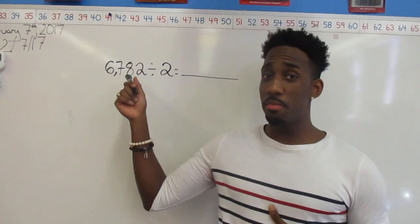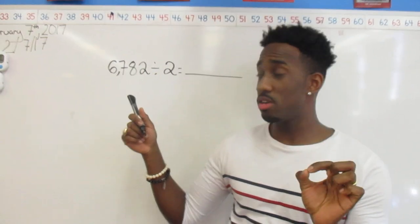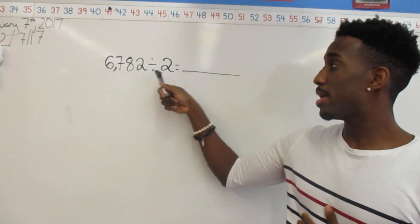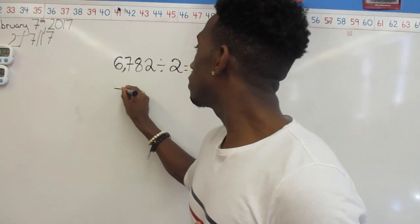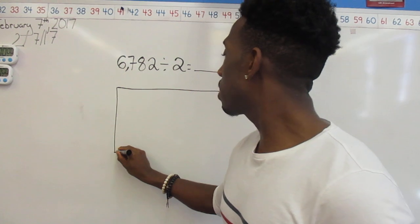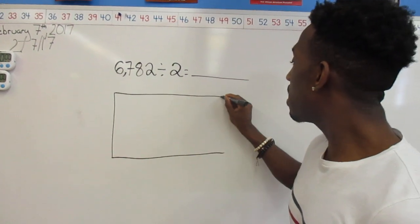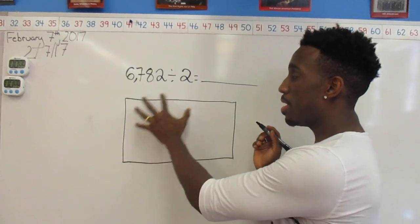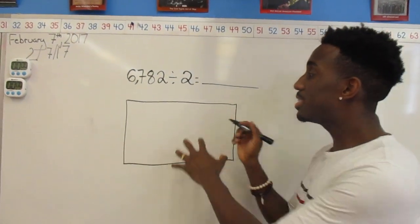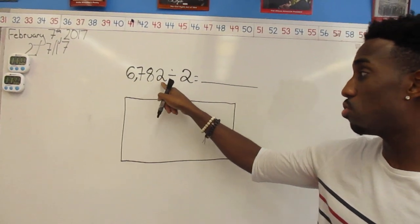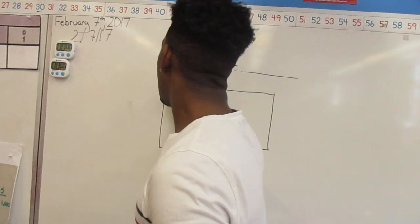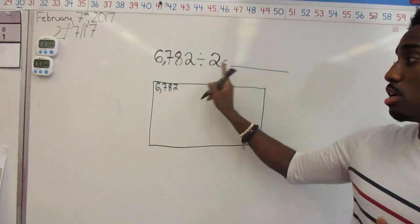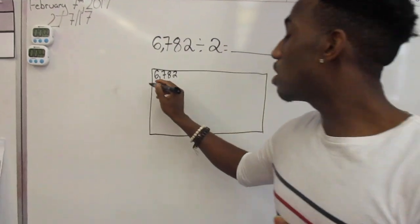Now I'm going to show you how we can solve this problem using the area model for division. Here I have a four-digit number, 6,782 divided by 2. I'm drawing a rectangle — it's called the area model for division because we're going to treat the entire space on the inside as the area. This entire inside has an area of 6,782, so I'm going to write that in my upper left-hand corner so I can remember how much area is on the inside. The number 2 is going to be my side length, so I'm going to put 2 right here.